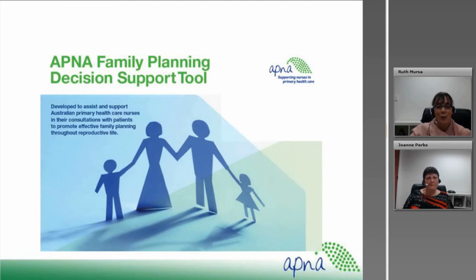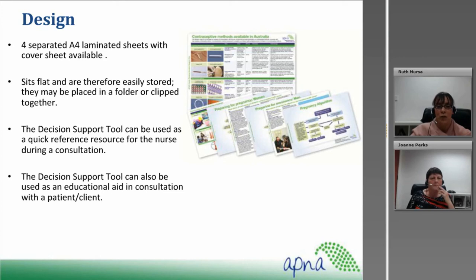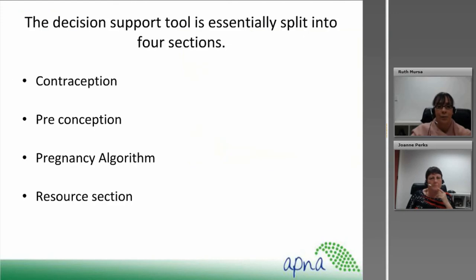Let's look at the decision support tool. It's designed as four separated A4 laminated sheets with a cover sheet that will be easily stored — it can sit flat and be placed in a folder or clipped together. The tool can be used as a quick reference resource for nurses during a consultation but also as an educational tool when consulting with a patient, showing pictures and providing easy evidence-based guidelines. The decision support tool is essentially split into four sections: contraception, preconception for both males and females, a pregnancy algorithm, and a resource section at the end.